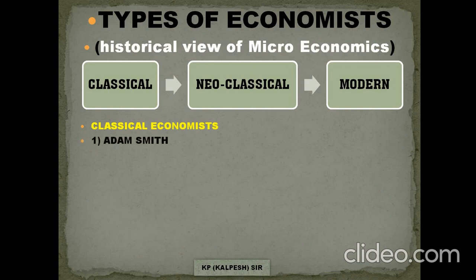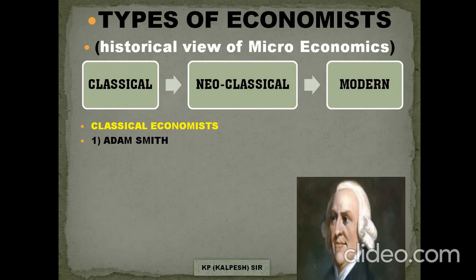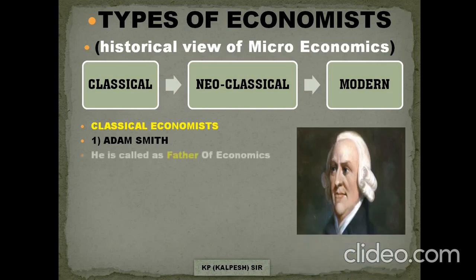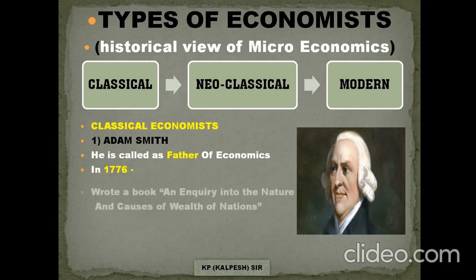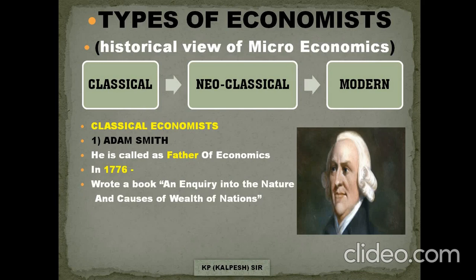Let's start with classical economists. The first name is Adam Smith. Adam Smith is called the father of economics. In 1776, he wrote a book called 'An Enquiry into the Nature and Causes of the Wealth of Nations' — you can also simply write 'Wealth of Nations,' both are accepted. The next classical economist is Sir David Ricardo; those who want extra information should study his theory of wages or theory of profit. The third classical economist is J.S. Mill.